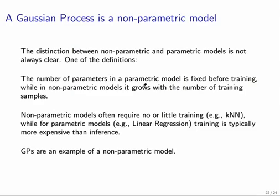So in a parametric model, the number of parameters is fixed before training. A neural network would be a great example because once we fix the number of layers and neurons per layer, then we have a defined number of weights and biases that we have to train.